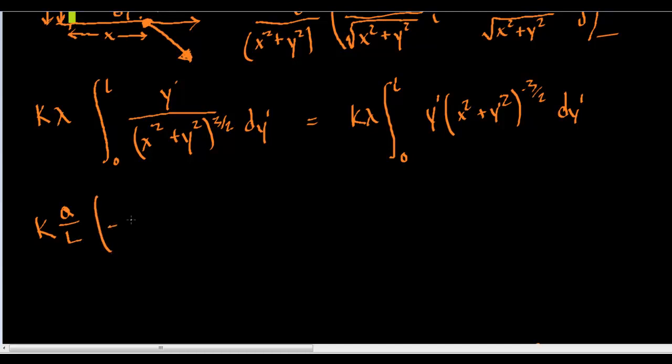Times negative, let's do this, negative y over x squared plus y squared to the - this is going to be square rooted, right? And that is all evaluated from 0 to l.